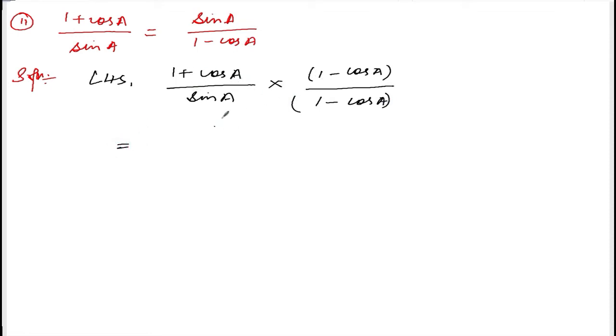This is divided by sin A into 1 minus cos A. So 1 minus cos square A will be sin square A.